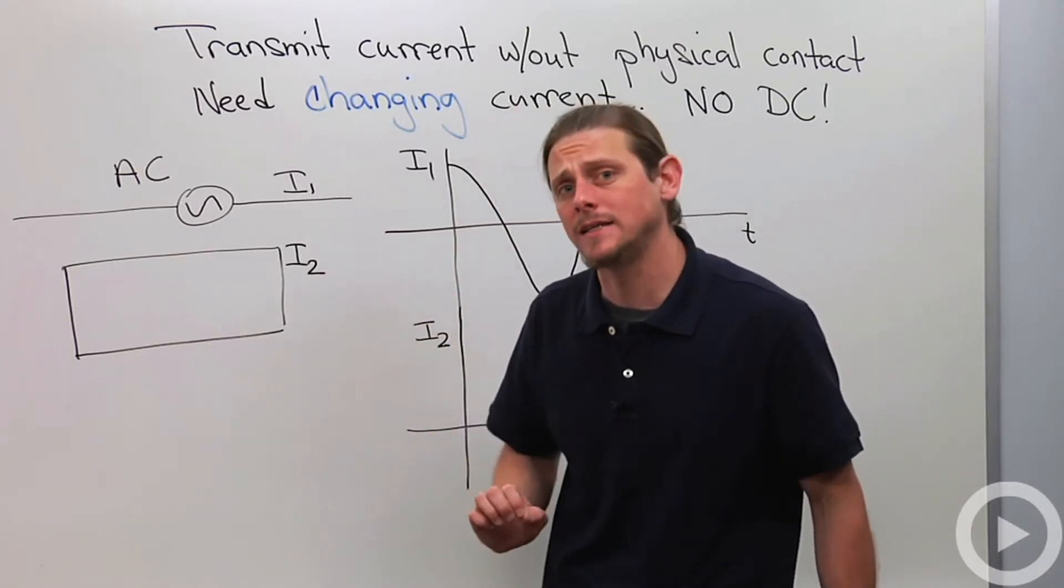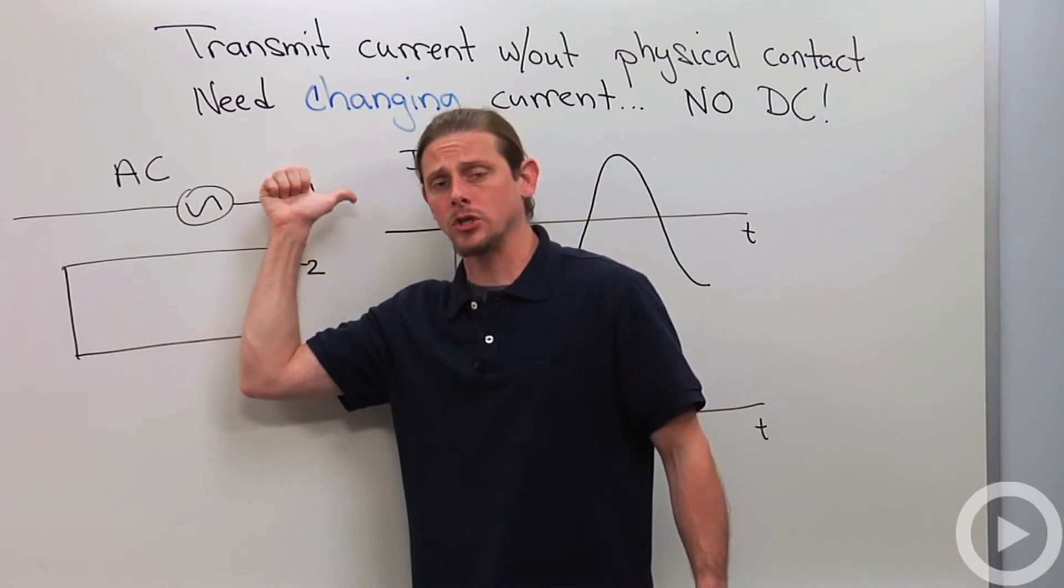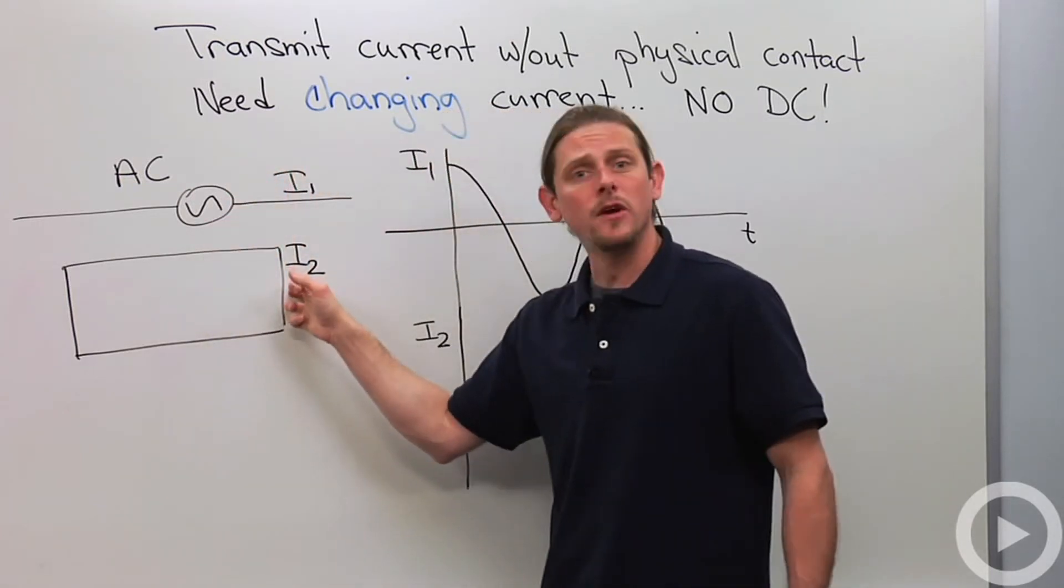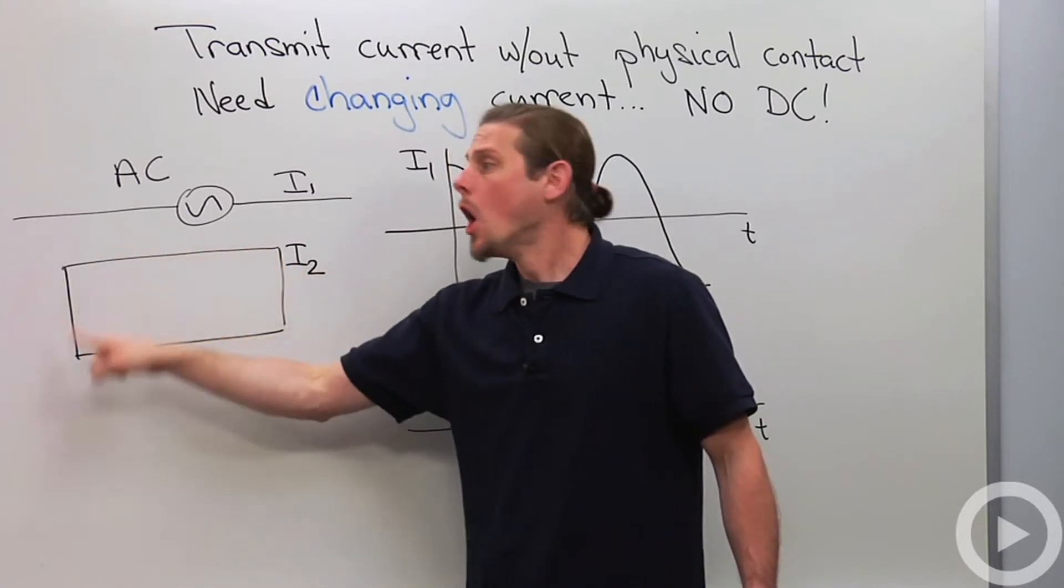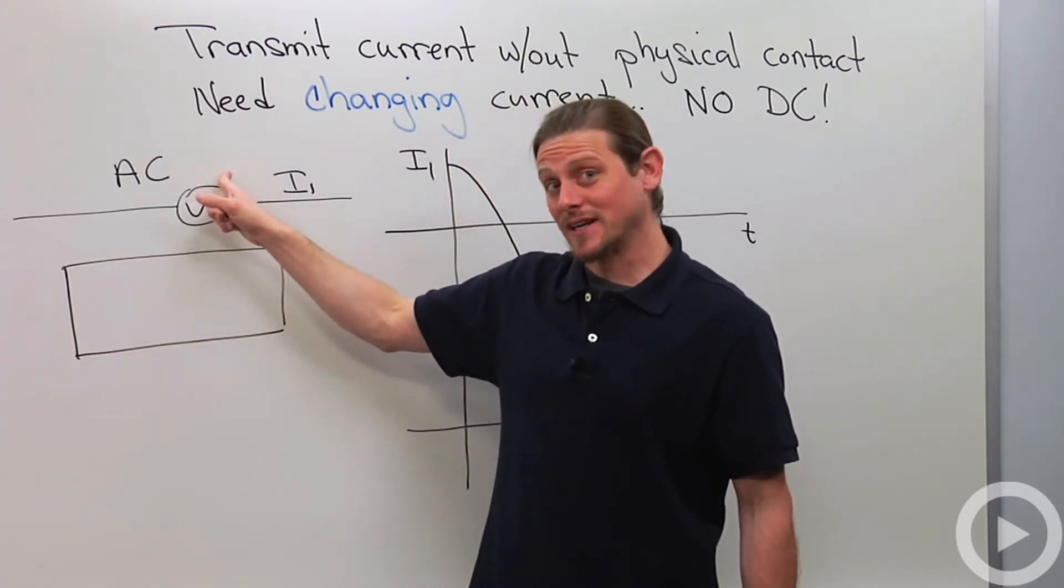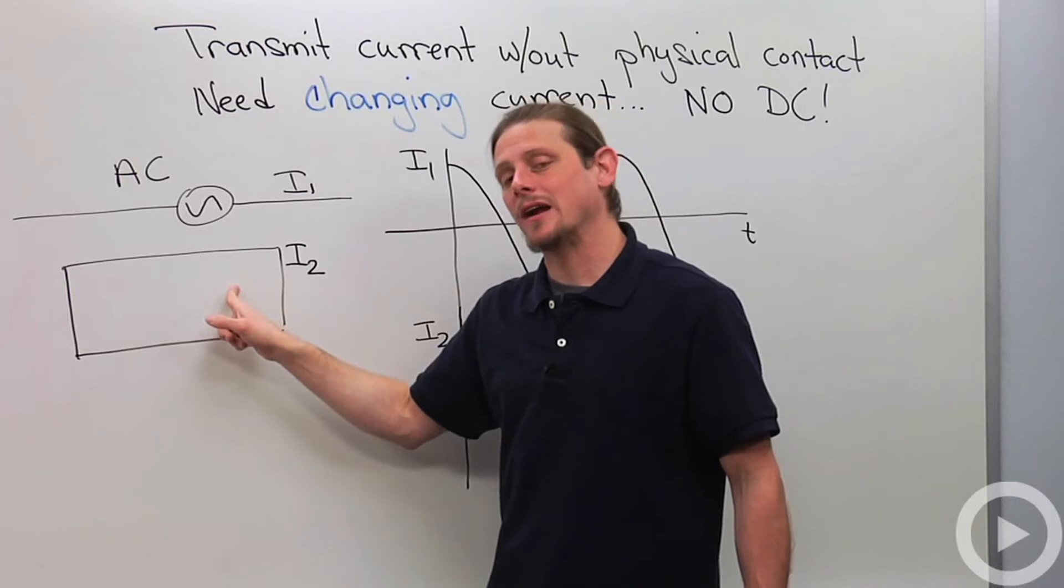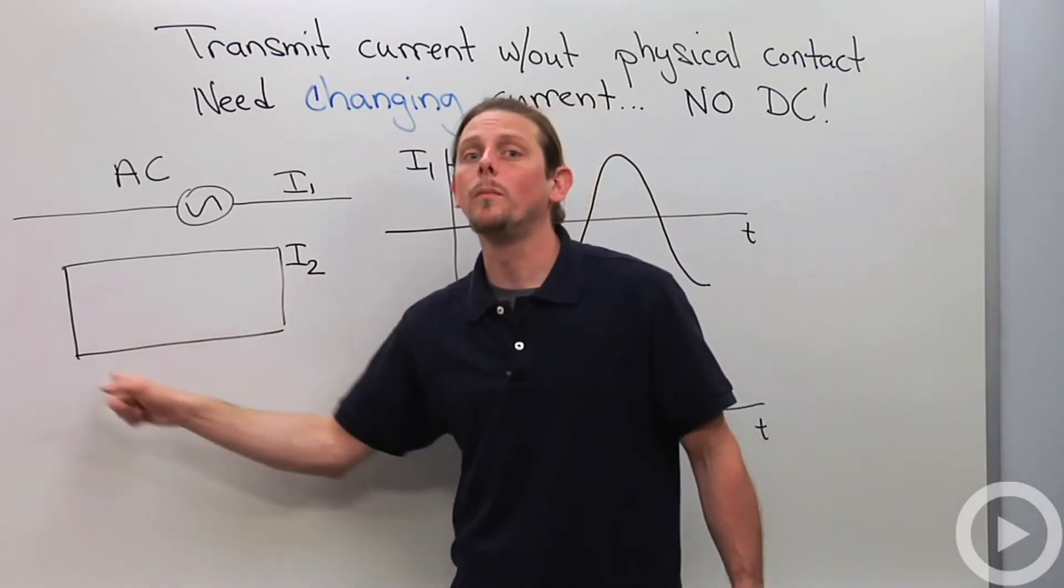So what people do instead is they use something called alternating current. Here's the idea: when this current is increasing to the right, the generated current will be counterclockwise. When this current is decreasing, the generated current down here will be clockwise.